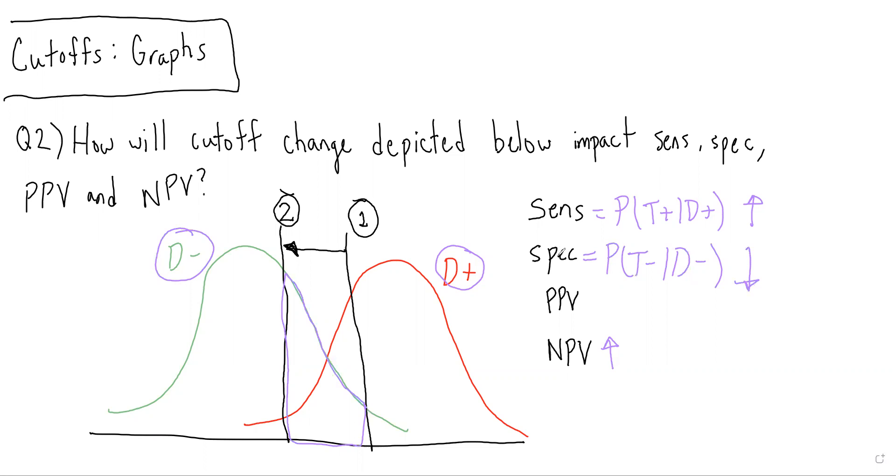We know specificity and PPV track with one another, so if specificity is going down, PPV must also be going down.